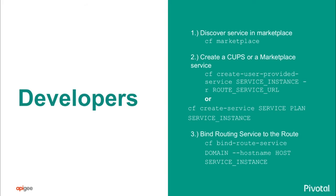The bind route service command takes a route rather than just an app, and binds that route to the service instance. The service broker returns a URL, which allows the Go Router to shunt the request off to that URL and back — that's how we inject that capability. There are two ways to set this up: a dynamic model where the Go Router decides per-route, and a simpler static model where infrastructure sits in front of the Go Router intercepting every request. The dynamic model is easier to set up and maintain; the static model may have latency advantages.